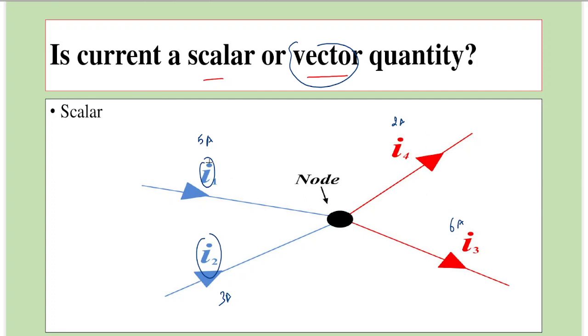For now, if you observe carefully, here in this branch the current flowing is 5 Ampere and also current has a direction here. Same with I2 also.